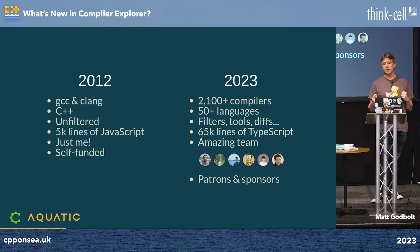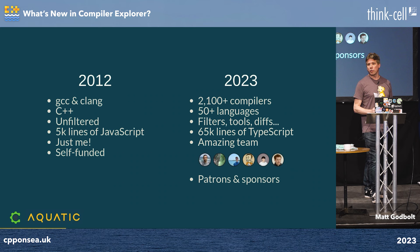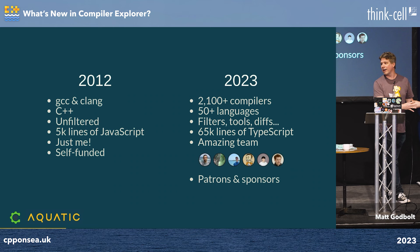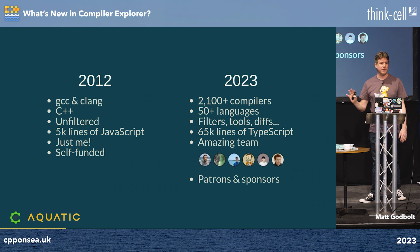Fast forward 11 years and we've now got more than 2,000 compilers, 50 languages, all sorts of filtering options, tools, diffs, and all sorts of things which I'll talk about today. It's 65,000 lines of TypeScript — and for those who don't know, TypeScript is JavaScript with types that compiles to JavaScript, thus mixing all the benefits of a long compile with the drawbacks of not really having proper types.